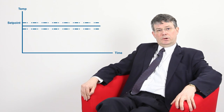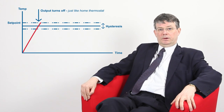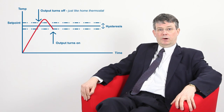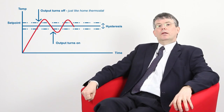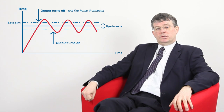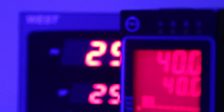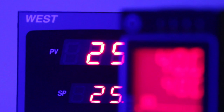With on-off control, the output will always remain on until the set point has been reached, at which point it will turn off, and will remain off until the process has fallen back below the set point, at which point it will turn back on again. This will inevitably lead to some kind of overshoot and undershoot. The amount of oscillation in the process is entirely dependent on the speed at which the process rises and falls. The user has very little control over this, except to adjust an on-off differential or hysteresis parameter if available.